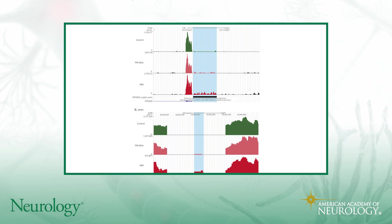In the ALS and FTD literature, TDP-43 represses inclusion of these cryptic exons in the final RNA transcript. The idea here is that if TDP-43 or TAR DNA binding proteins are not working as they should, then there's increased inclusion of these cryptic exons. That's what's being graphed from these samples from patients with IBM and PM-Mito.